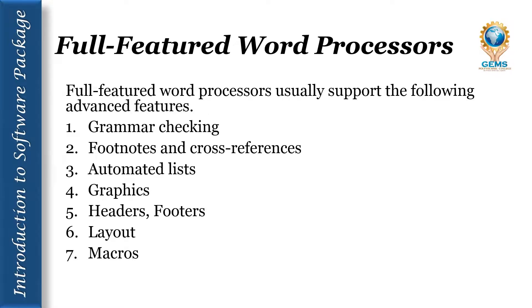Next is full feature word processor. These are advanced features available in the latest paid version of Microsoft Office software. The first one is grammar checking, which identifies sentences, paragraphs, and portions that don't appear to meet commonly recognized rules of grammar.